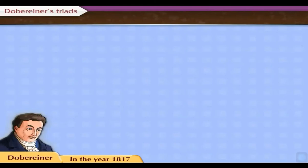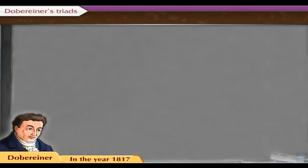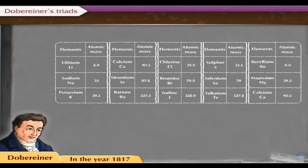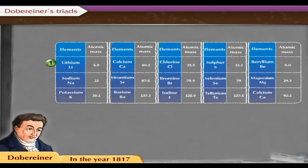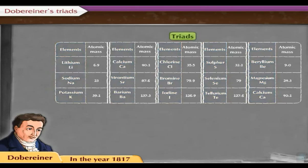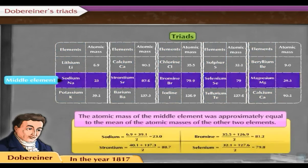Dobereiner's Triads. In the year 1817, a German scientist, Dobereiner, suggested that there is a relation between properties of elements and atomic masses. He made groups of three elements, each having similar chemical properties. They were called triads. He arranged the groups of three elements in increasing order of atomic mass and showed that the atomic mass of the middle element was approximately equal to the mean of the atomic masses of the other two elements.